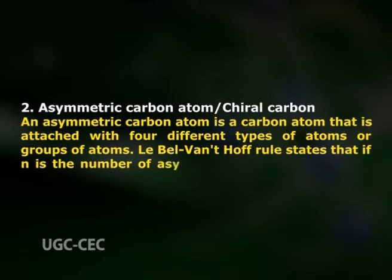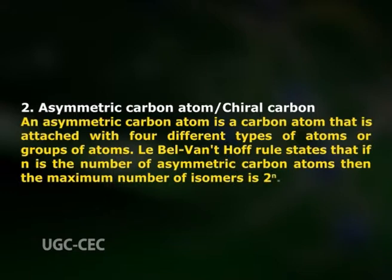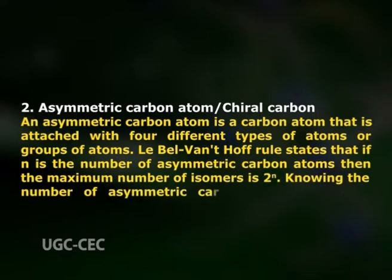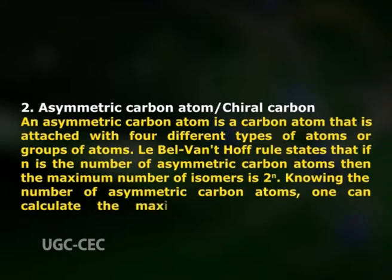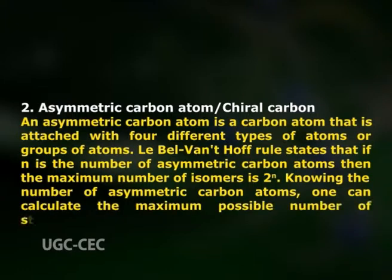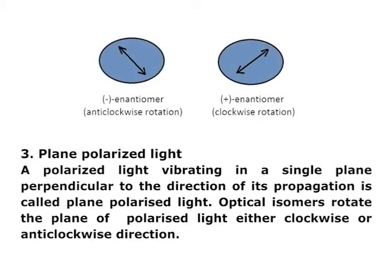The Le Bel–Van't Hoff rule states that if n is the number of asymmetric carbon atoms, then the maximum number of isomers is 2 to the power n. Knowing the number of asymmetric carbon atoms, one can calculate the maximum possible number of stereoisomers. Number 3: Plane polarized light. Polarized light vibrating in a single plane perpendicular to the direction of its propagation is called plane polarized light. Optical isomers rotate the plane of polarized light either clockwise or anticlockwise.